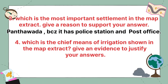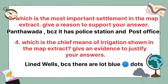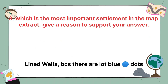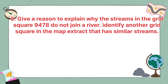Which is the cheap means of irrigation shown in the map extract? Give evidence to justify your answer. The cheap means of irrigation is lined wells, because there are lots of blue dots we can identify on the extract map.